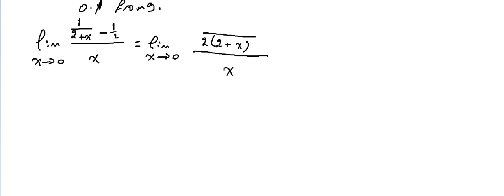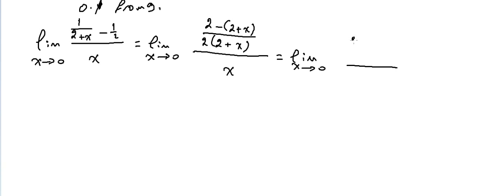If we divide 2(2+x) by (2+x), we get 2 times 1, which is 2. Minus: if we divide the common denominator by 2, what's left is (2+x) multiplied with 1, so it's minus (2+x). We get: limit as x→0 of [2 minus (2+x)] over [x(4+2x)].